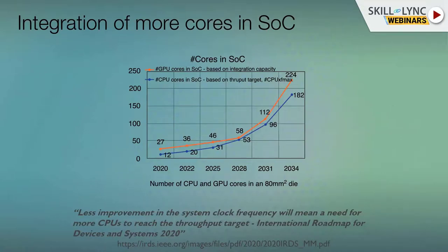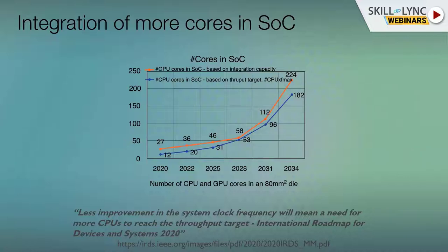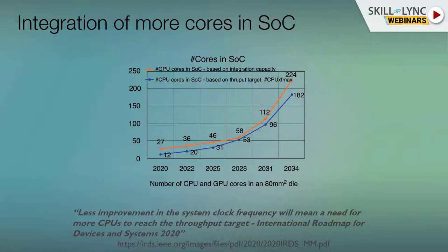Another challenge is that our SOCs these days have many cores — CPU cores, GPU cores, multiple CPU cores — all built into one SOC. This is a problem because you have multiple blocks talking to each other. How will performance be impacted in implementation? Our areas are getting larger, so how can we optimize area? Our interconnects are also becoming a problem.